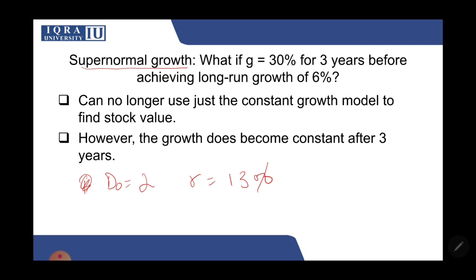Usually when a business starts up, it is expanding and grows really quickly. In the initial years, businesses grow at a very fast rate, but after some time, once they reach maturity, their growth rate slows down. After three years, it is assumed the business will keep growing at the 6% rate. You can no longer use the constant growth model to find the stock value because the growth rate is changing.